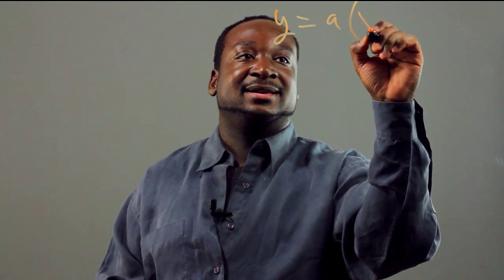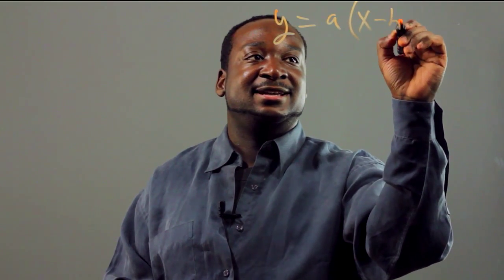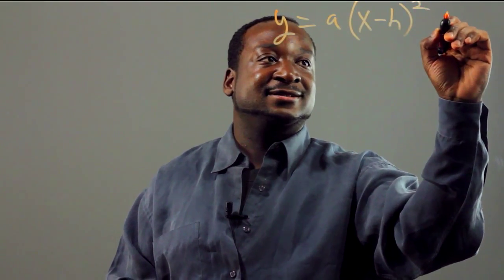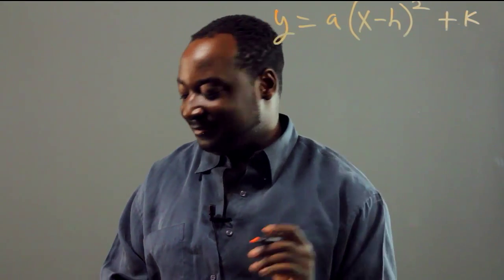Here's the standard way of writing a parabola: y equals a times (x minus h) quantity squared plus k.